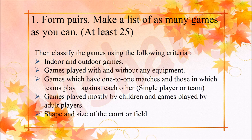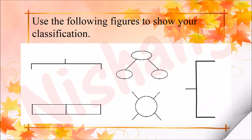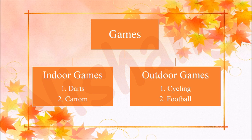The fifth criteria is the shape and size of the court or field — how big, how small, and what shape it is. Using the figures provided, we classify the games accordingly. I have classified the games by shape and category.